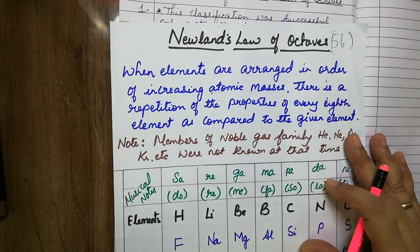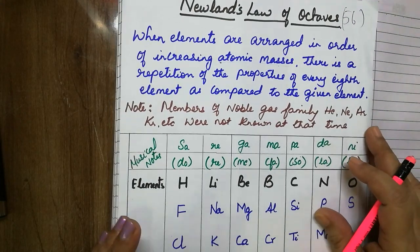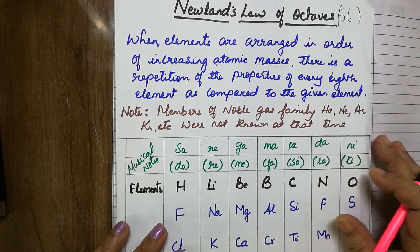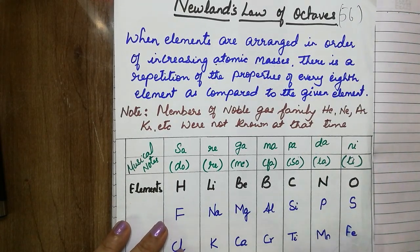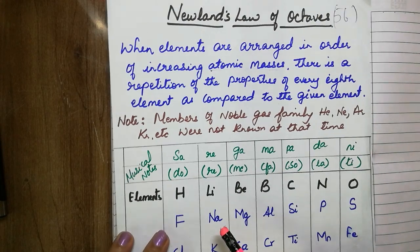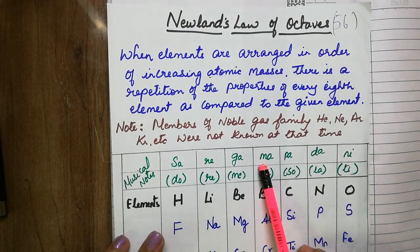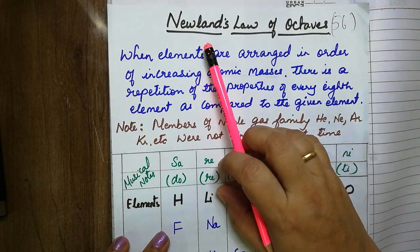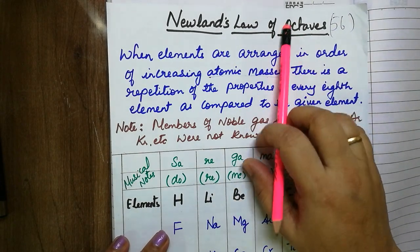Hi all, today we will be learning about Newland's Law of Octaves. In my first video for periodic classification of elements, I have taught you about Dobriner Triads. After Dobriner, the next person who gave a major contribution for classification was John Newland. He gave this as Newland's Law of Octaves, Octave 8.